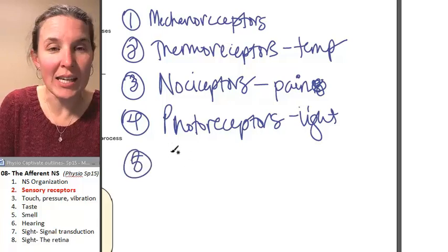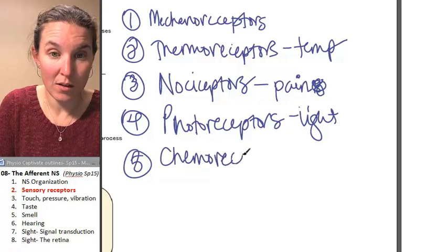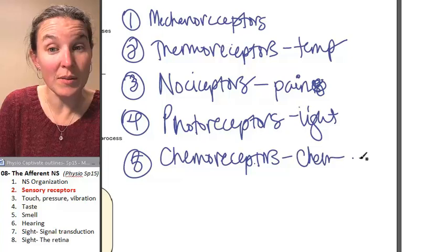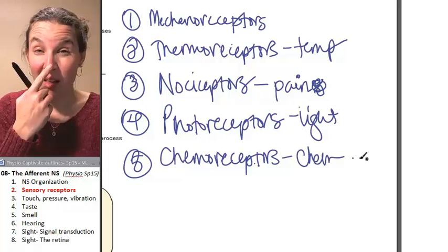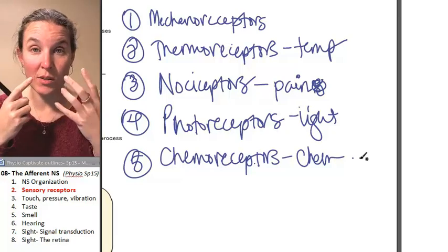And our last one are chemoreceptors. Chemoreceptors respond to chemicals. Smell is a chemical—you're responding to chemicals in the air. Taste, that's a set of chemoreceptors.